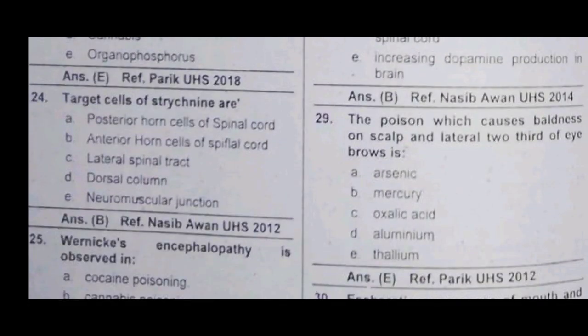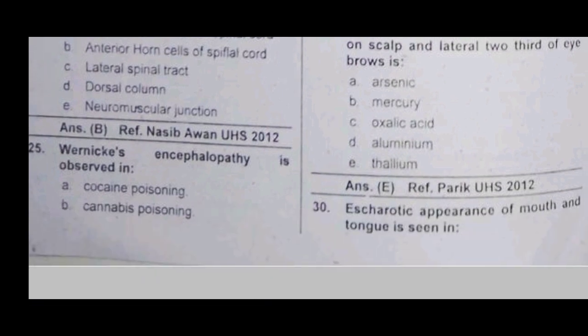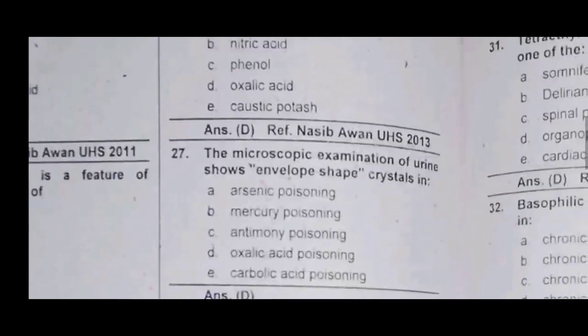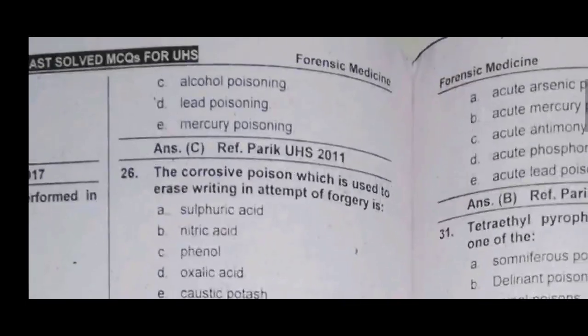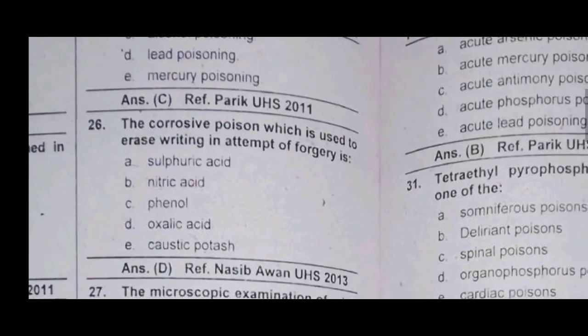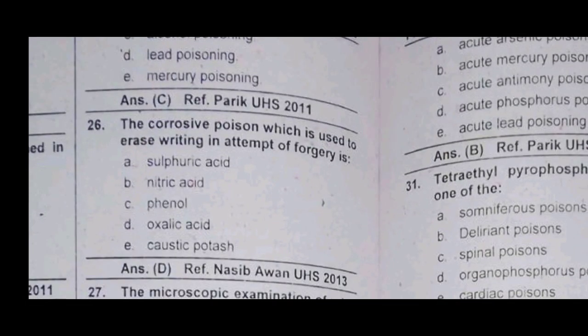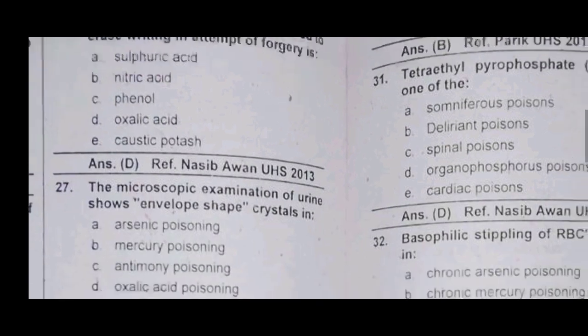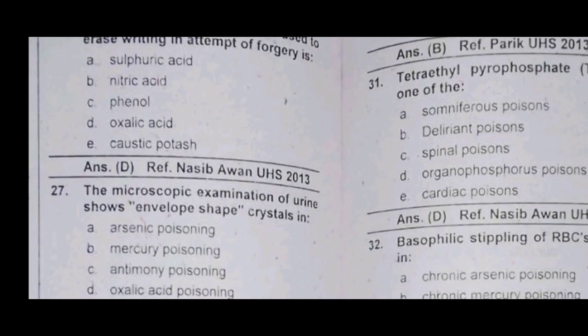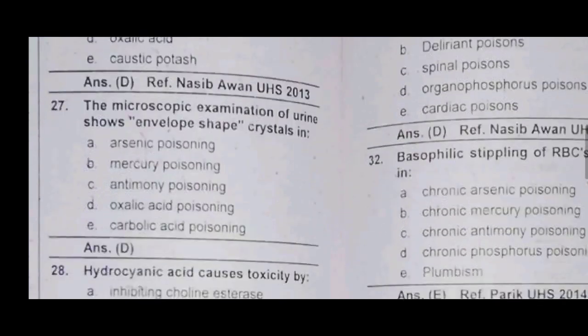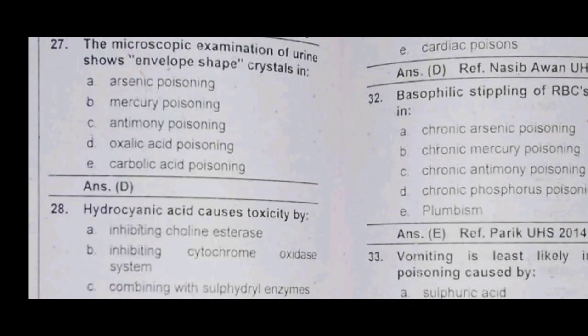Red tear — which is in phosphate, which is in target, stretcher, and spinal cord — and which is in thiamine deficiency. Which is oxalic acid, which shows an envelope-shape crystal on microscopic examination — oxalic acid.